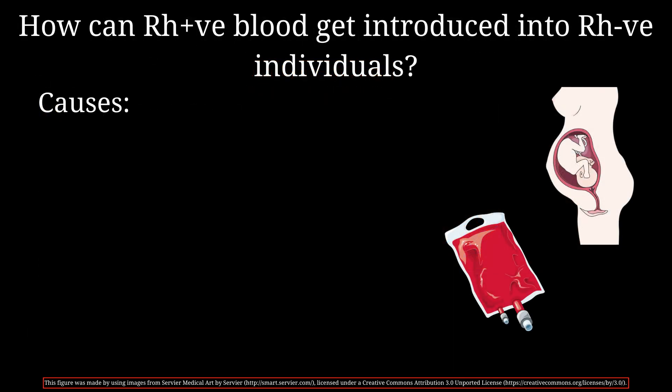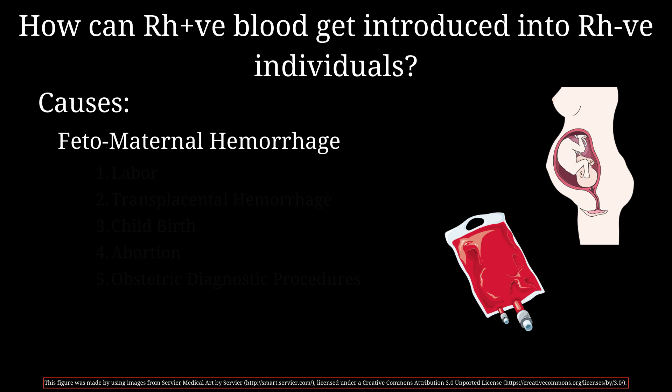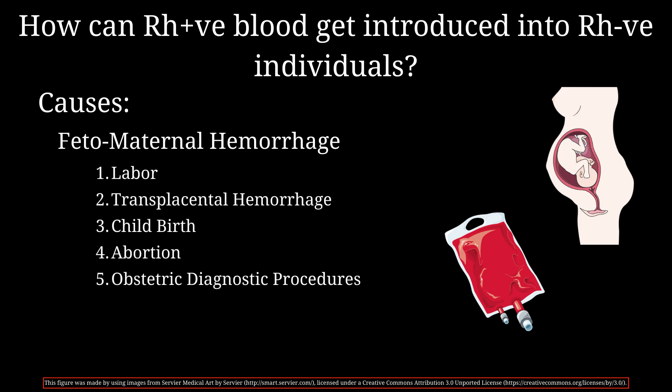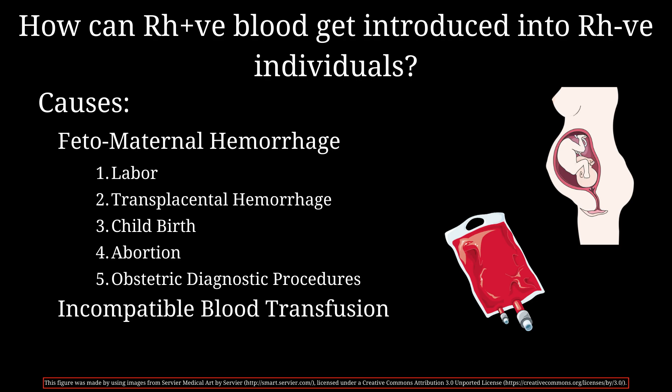Let's look at some causes that can introduce RH positive blood into a patient with RH negative blood. Fetomaternal hemorrhage is an umbrella term referring to causes that lead to entry of fetal blood into the maternal circulation during pregnancy — it can occur during labor, transplacental hemorrhage, childbirth, or abortion. Obstetric diagnostic procedures can also sometimes be the reason. Additionally, if the mother ever had an incompatible blood transfusion in the past that exposed her to RH positive blood, anti-D antibodies are likely present in her serum.